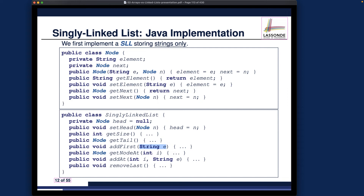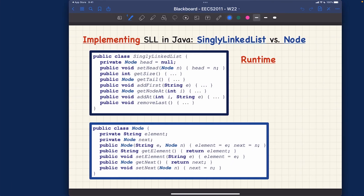Before discussing individual methods, let's talk about how to visualize things at runtime — this is very important for tracing code as you design your algorithm. When visualizing an object in OOP, you need to note: first, the type of the object (which class it was instantiated from), and second, which attributes to show for that particular object.